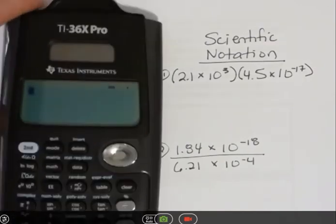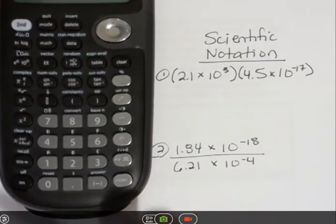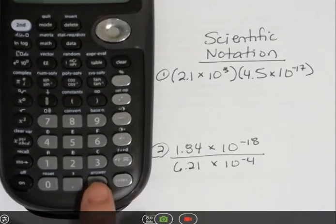So whenever I'm hitting enter, that's the button at the very bottom, so you won't see that. And when I'm hitting the negative sign, I'm using this, never the subtraction sign for negative.